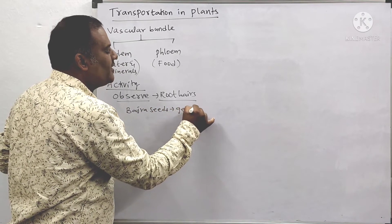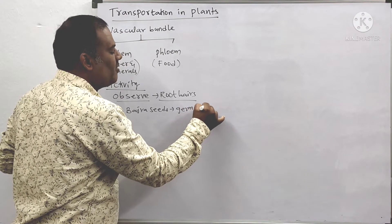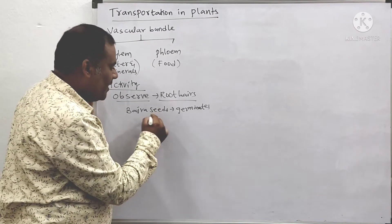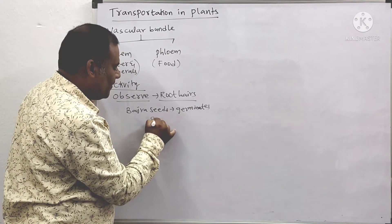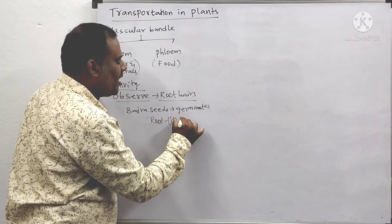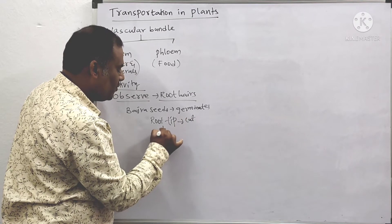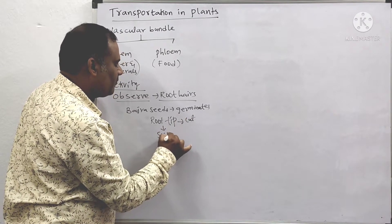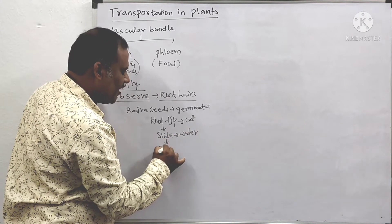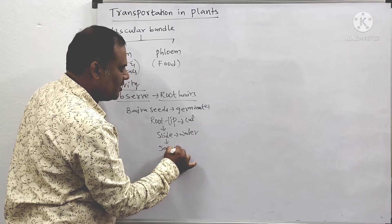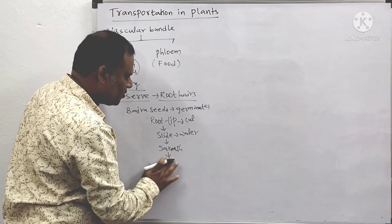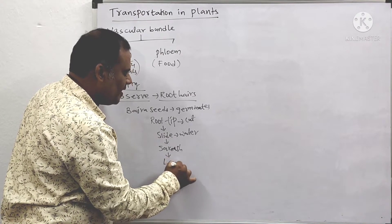To get germination, soak the seeds in water overnight and they will sprout and germinate. From the root tip, you cut a small portion and keep it on a slide. Add some water and then gently squash it. You can observe it — not under a microscope, but with a magnifying lens.